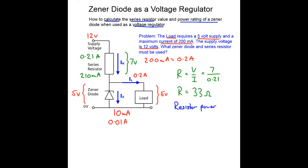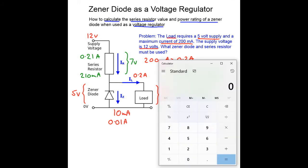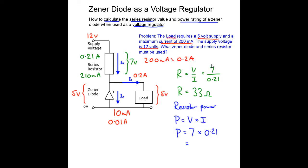The power is given by the equation V times I. So the power for the resistor is the resistor voltage which is 7 volts times by the current flowing through it which is 0.21, which equals 7 times 0.21, that equals 1.47 so 1.5 watts. So that means our resistor must have a power rating of at least 1.5 watts.